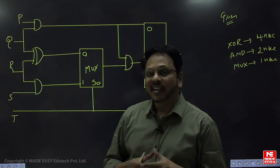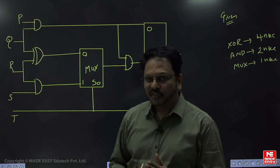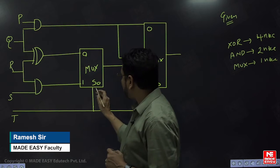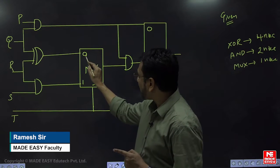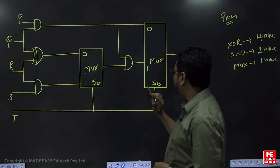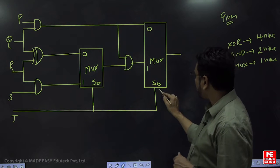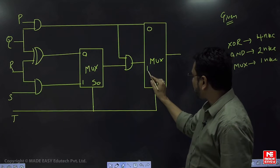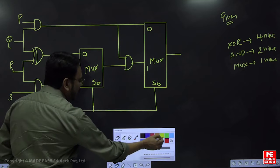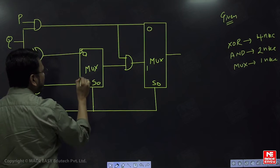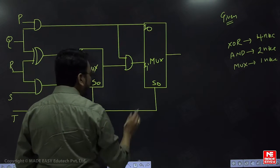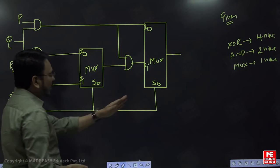To deal with this in a simple manner, first recall the basic multiplexer operation. When the select line is zero, it will select i-naught; if the select line is one, it will select i-one. Here also, the same applies — the select line controls which input is chosen. This symbol here is i-naught, and this one is i-one, with selection based on s-naught.